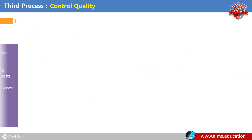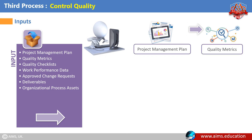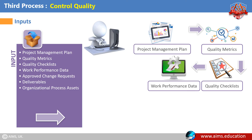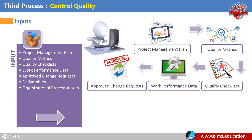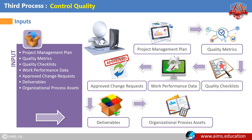Inputs for the Perform Quality Control process are: project management plan, quality metrics, quality checklists, work performance data, approved change requests, deliverables, and organizational process assets.